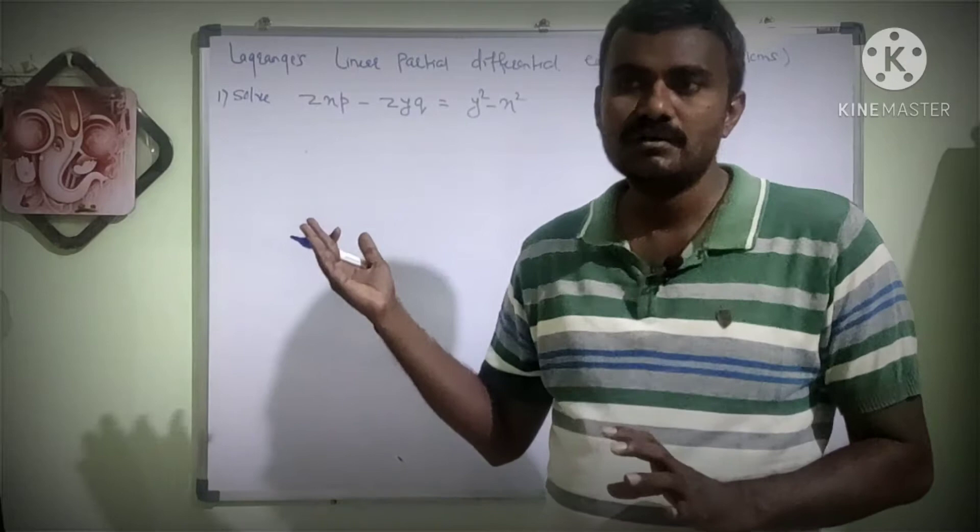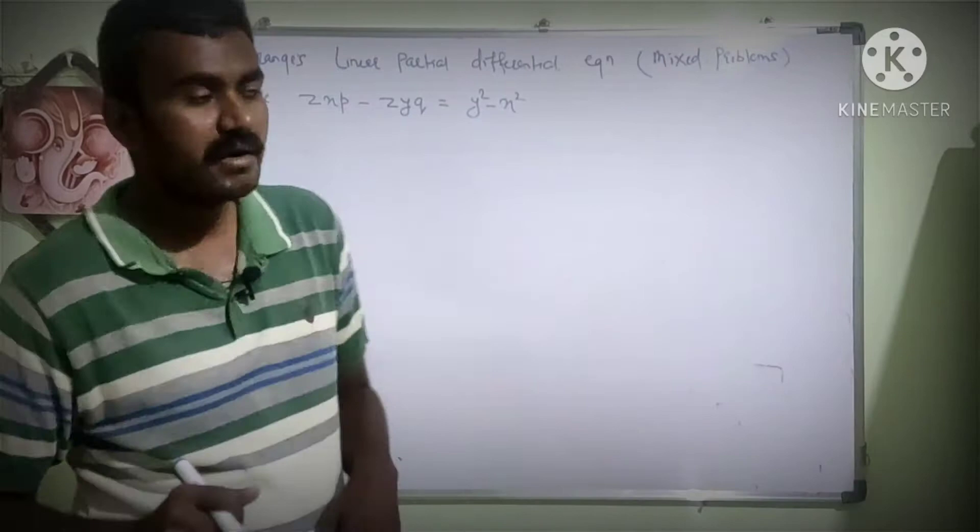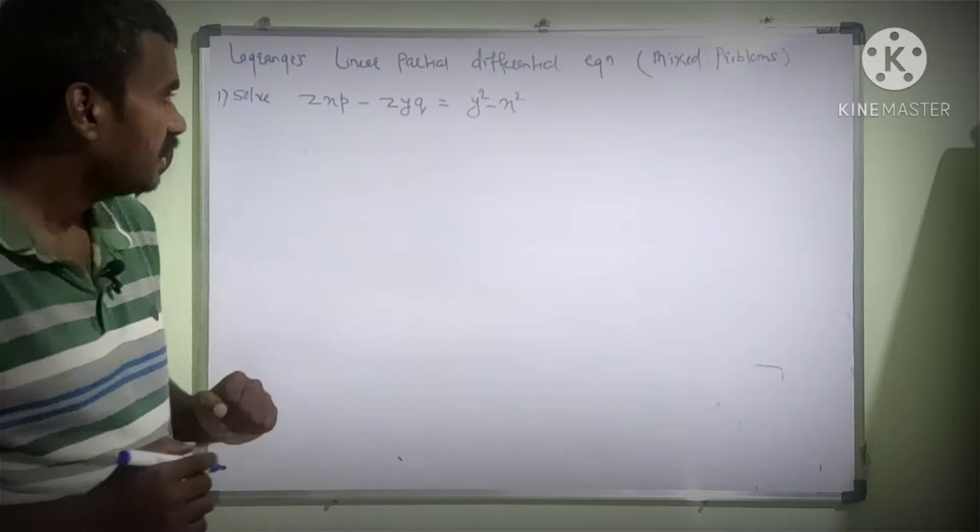We have to use both methods simultaneously to obtain the two solutions. So let's start with the example: Solve zxp minus zyq equal to y square minus x square.